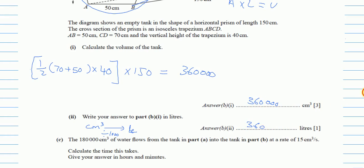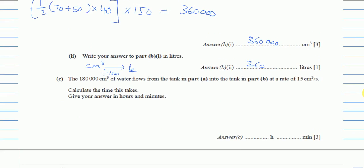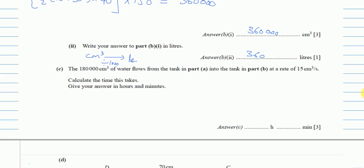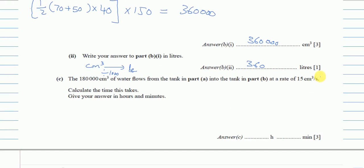Part C: the 180,000 cm³ of water flows from the tank in part A into the tank in part B at a rate of 15 cm³ per second — that's a kind of speed. Calculate the time this takes; give your answer in hours and minutes. First find the answer in seconds, then convert.